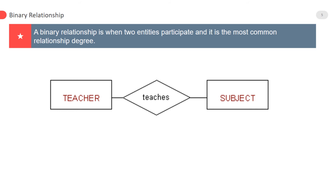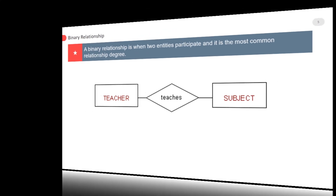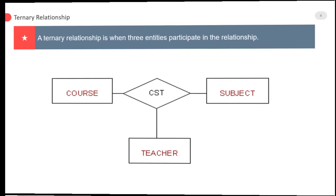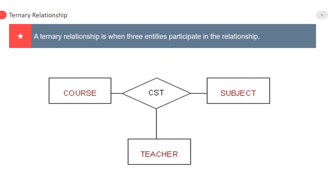A binary relationship is when two entities participate, and it is the most common relationship degree. The last one is the ternary relationship — a ternary relationship is when three entities participate in the relation.